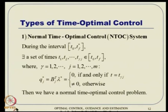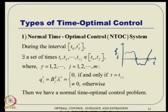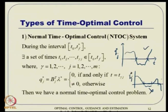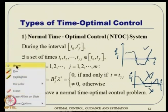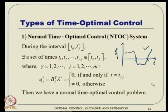Pictorially: q_j* can change sign, but only at a discrete point in time — this is allowed. However, if q_j* remains zero over a finite interval [t_1, t_2], that is not allowed for normal control. When q_j* can remain zero over a finite interval, this is called a singularity interval and the resulting control is called singular control — a singular time optimal control problem, where the control within that interval is not defined.